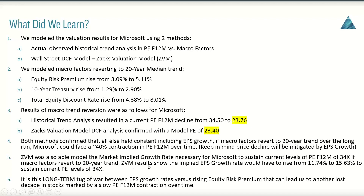The Zacks valuation model also modeled the market-implied growth rate necessary for Microsoft to sustain current PE levels if macro factors revert to the 20-year trend. The implied EPS growth rate would have to rise from 11.74% to 15.63% to sustain a current PE of 34x with an 8.01% equity discount rate. If we do get a repeat of an extended period of rising equity risk premium — and there's no telling whether we will, as any number of long-term global economic factors could cause it — it's going to be a long-term tug-of-war between EPS growth rates and that rising equity risk premium. That's what we'll be watching over the next couple of years.